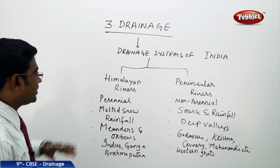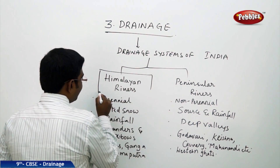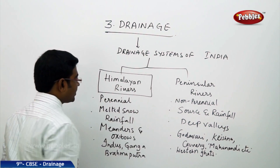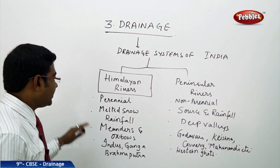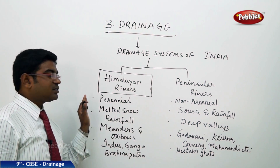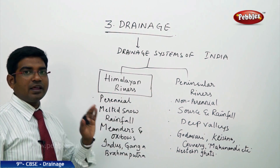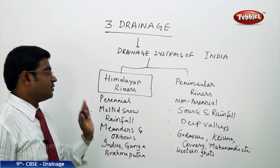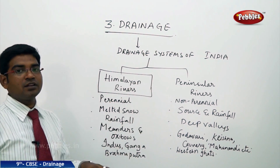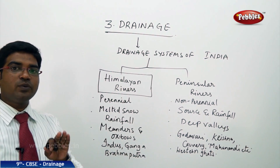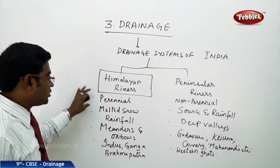The Himalayan rivers are the rivers which have their origination or source from the Himalayas, which is why they are appropriately known as Himalayan rivers. These rivers flow continuously throughout the whole year — even in summer, winter, and the rainy season — maintaining an equal balance of water in their sources. They are known as perennial rivers.